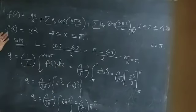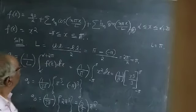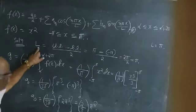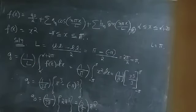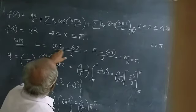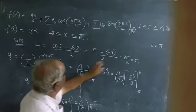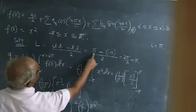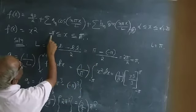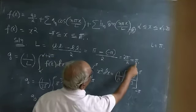Now let us take a first example where f(x) = x², and the given interval is minus 5 ≤ x ≤ plus 5. As usual, what is l? l is equal to upper limit minus lower limit divided by 2. Upper limit is plus 5, lower limit is minus 5, divided by 2. So l = (5 - (-5)) / 2 = 10/2 = 5.